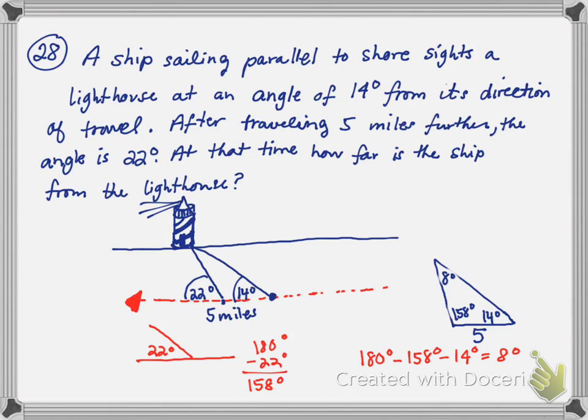I'm going to use this triangle to find the distance between the ship and the lighthouse after it's traveled 5 miles. So I'm basically looking for this side here.